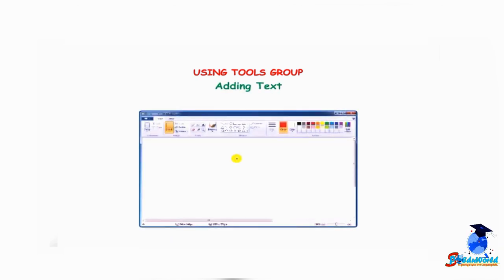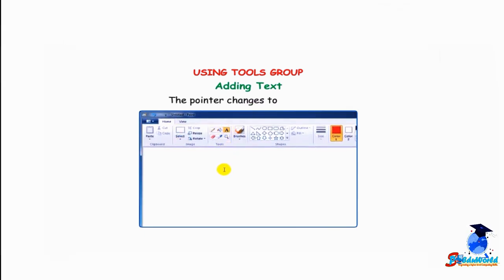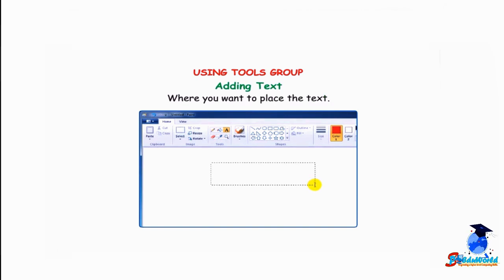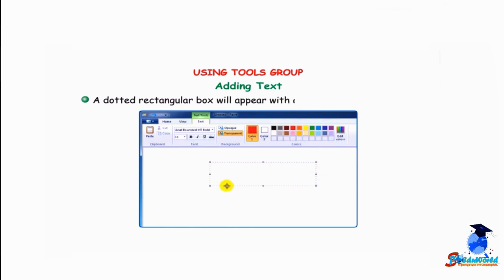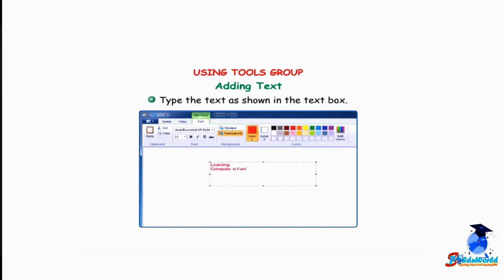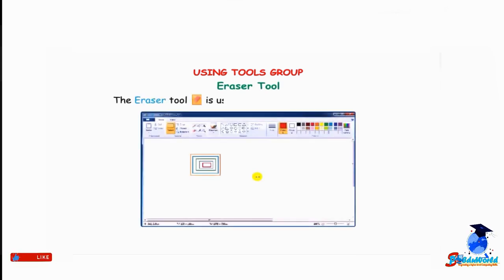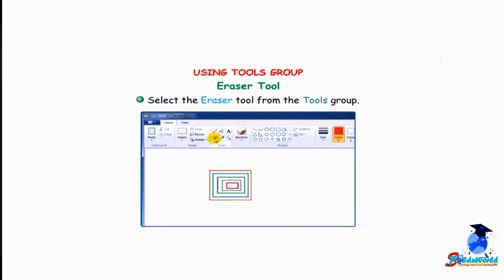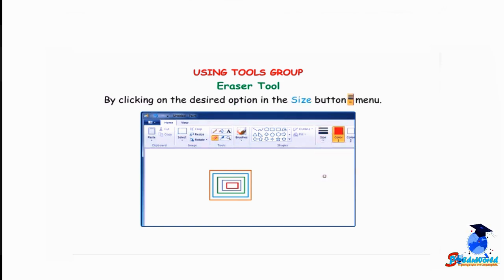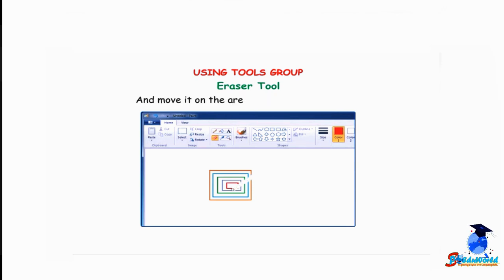Adding text — click on the text tool. The pointer changes to an I-beam shape. Click and drag the pointer on the drawing area where you want to place the text. A dotted rectangular box will appear with a blinking cursor inside it. Type the text in the text box. Eraser tool — the eraser tool is used to erase any part of a picture. Select the eraser tool from the Tools group, choose the size of the eraser from the size button menu, then hold the left mouse button and move it over the area you want to erase.